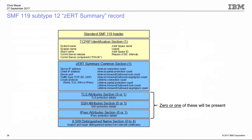Here's a look at the ZERT Summary Record, subtype 12. It looks similar to the subtype 11 at first glance, but with key differences. In the common section, we have endpoint information without the client port, what type of traffic it is (TCP or Enterprise Extender), and which cryptographic protocol is represented. Since it's a security session, there's only one cryptographic protocol, so you'll have zero or one protocol-specific section — never more than one. Statistics are in the common section: how many connections were protected, partial connections (where a connection started clear text then became TLS-protected), and inbound/outbound bytes and segments.